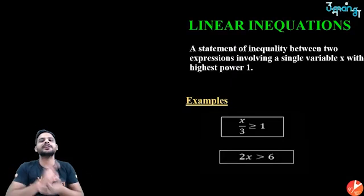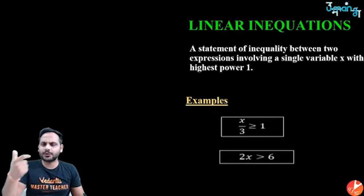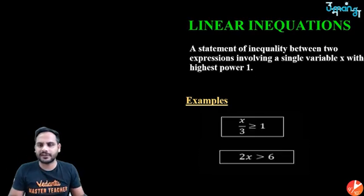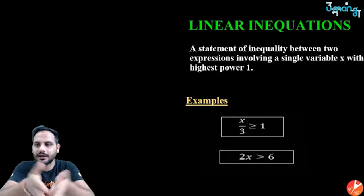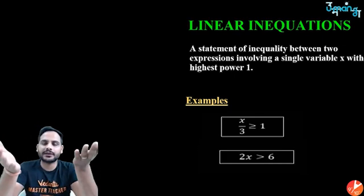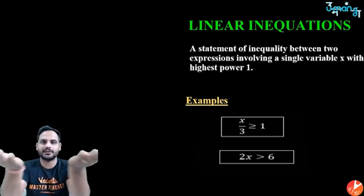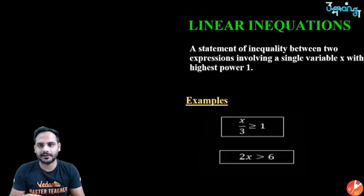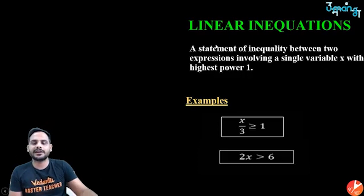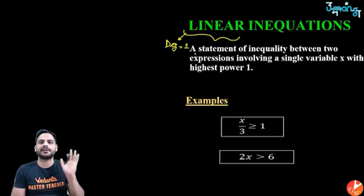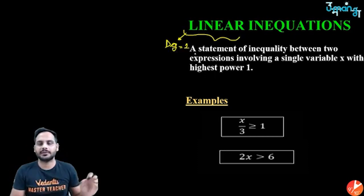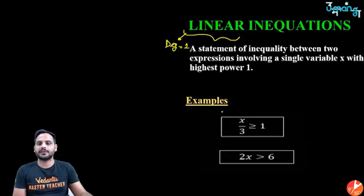First thing — what is a linear inequation? We studied linear equations where there's an equals sign in the middle. In inequations, there's no equality — one side is bigger, one side is smaller. The 'linear' part means the degree of the variable is 1, so no x-squared. For example: x/3 ≥ 1, or 2x > 6.